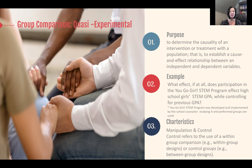Example quasi-experimental designs include within and between group designs. A within-group design often used is something called an interrupted time series design. A between-group design, which we would use with this example question, is what's called a pre-test, post-test, non-equivalent control group design. So that's a little bit about quasi-experimental design.